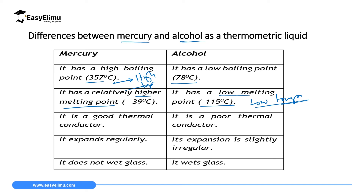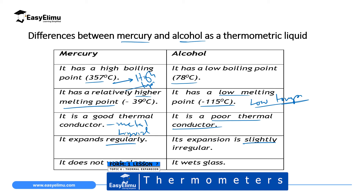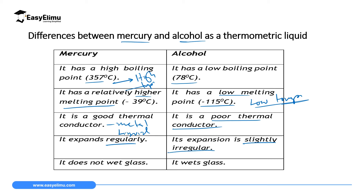Mercury is a good thermal conductor — it conducts heat very fast because mercury is a metal in liquid state. Alcohol is a poor thermal conductor and conducts heat slowly. Mercury expands regularly, while alcohol expands slightly irregularly — so if we need a substance that expands regularly, we prefer mercury. Mercury does not wet the glass because it has a very high cohesive force, while alcohol wets the glass. Since we need a substance that does not wet the glass, mercury is preferred.